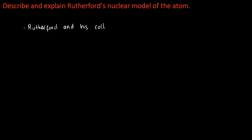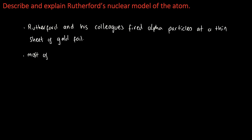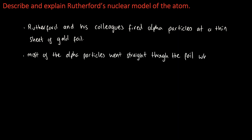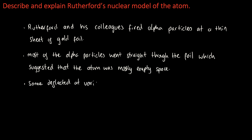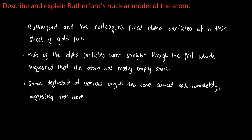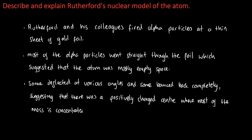Rutherford and his colleagues fired alpha particles at a thin sheet of gold foil. Most of these particles went straight through the foil, which suggested that the atom was mostly empty space. Some deflected at various angles, and some bounced back completely, suggesting that there was a positively charged centre where most of the mass is concentrated — and this is the nucleus.